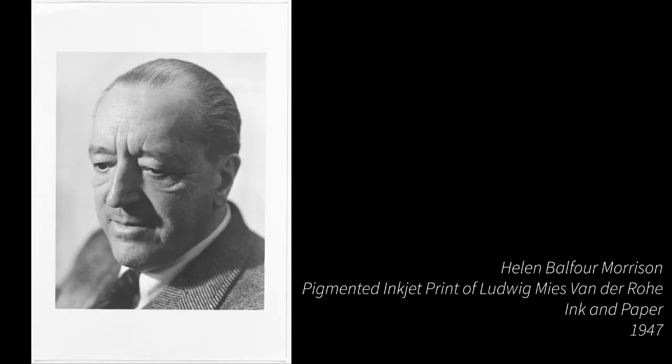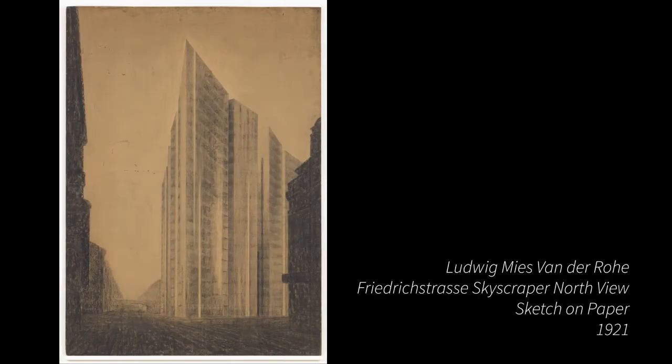Born in 1886 in Germany, Ludwig Mies van der Rohe was first educated in Aachen Cathedral School, and by 13 he began studying in a trade school in Aachen. Prior to 1921, Ludwig Mies continued to design buildings in a strictly conservative design, which ended when he submitted a design of his Friedrichstrasse skyscraper project.